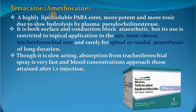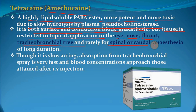Tetracaine, also called amethocaine, is a highly lipid-soluble PABA ester, more potent and more toxic due to slow hydrolysis by plasma pseudocholinesterases. It is both a surface and conduction block anesthetic, but its use is restricted to topical application to the eye, nose, throat, tracheobronchial tree, and rarely for spinal or caudal anesthesia for long duration. Even though it is slow acting, absorption from the tracheobronchial spray is very fast and blood concentration approaches that obtained after intravenous injection.